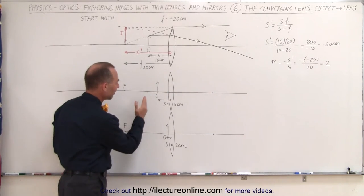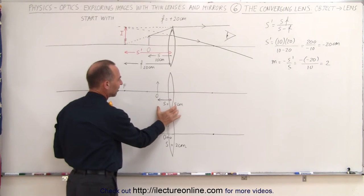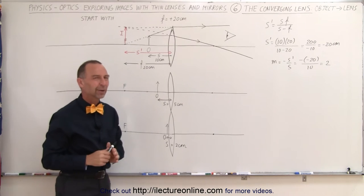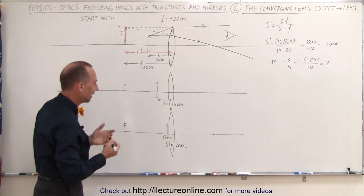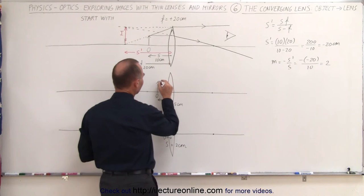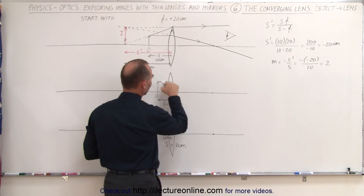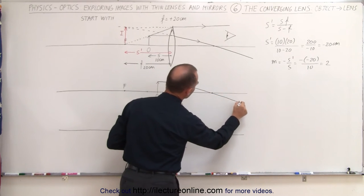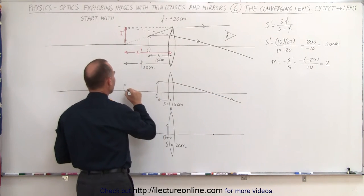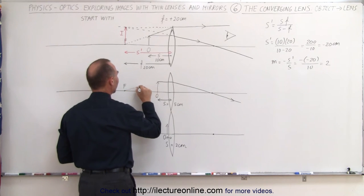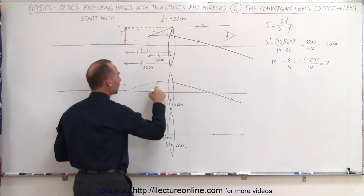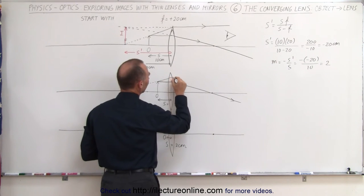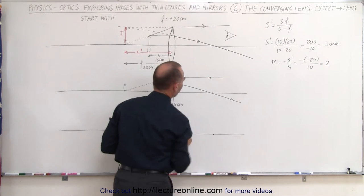So now we're going to place the object at the one-quarter mark, five centimeters away from the lens when the focal point is a distance of 20 centimeters. Let's see what happens to the image. We find out where the image is graphically by drawing the initial ray in this direction parallel to the optical axis. Then it bends and goes to the focal point on the other side of the lens.